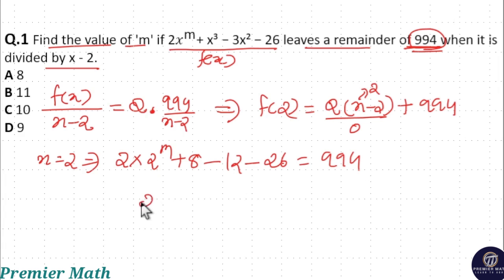This simplifies to 2 · 2^m = 994 minus (-30). Since -12 - 26 = -38, and -38 + 8 = -30, we get 2 · 2^m = 994 + 30 = 1024.